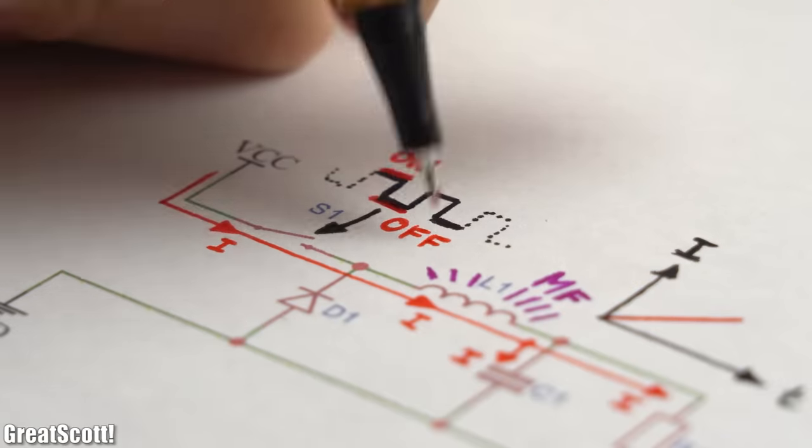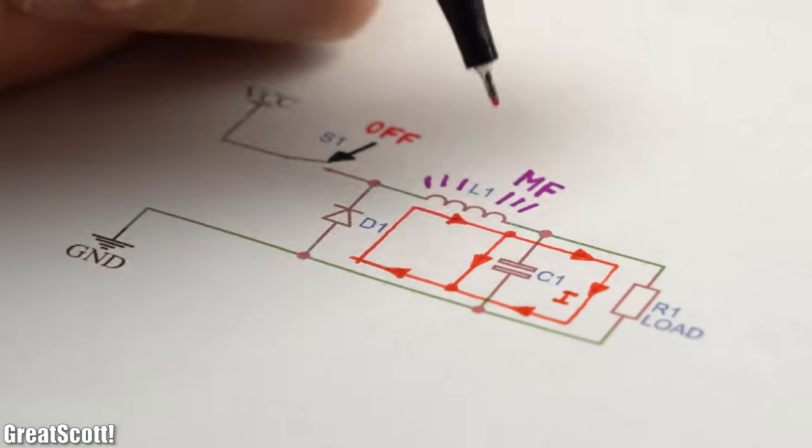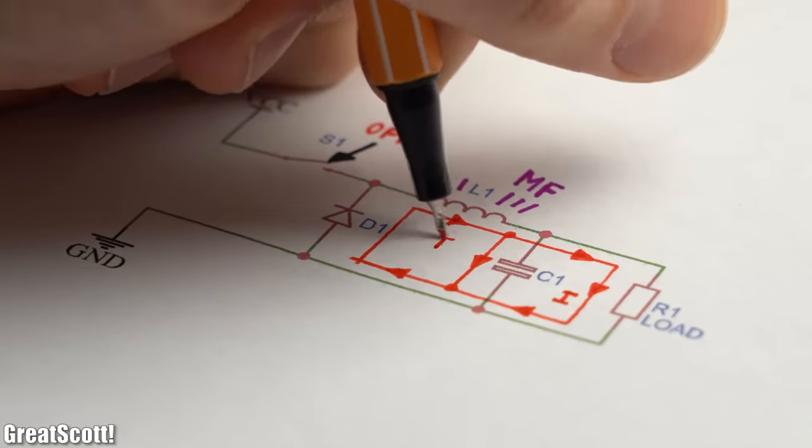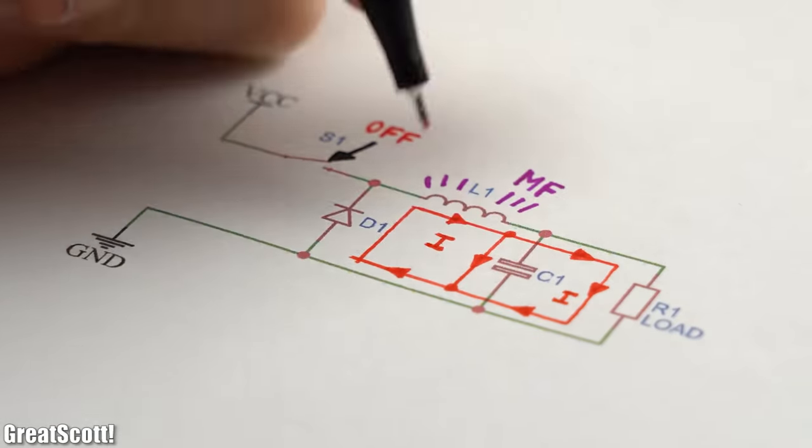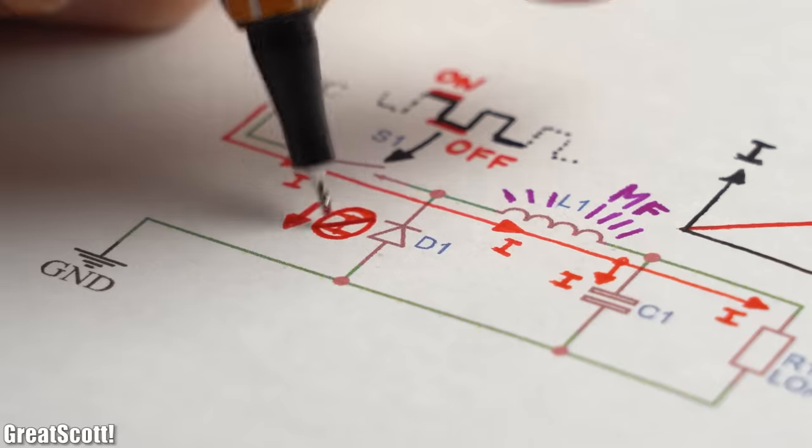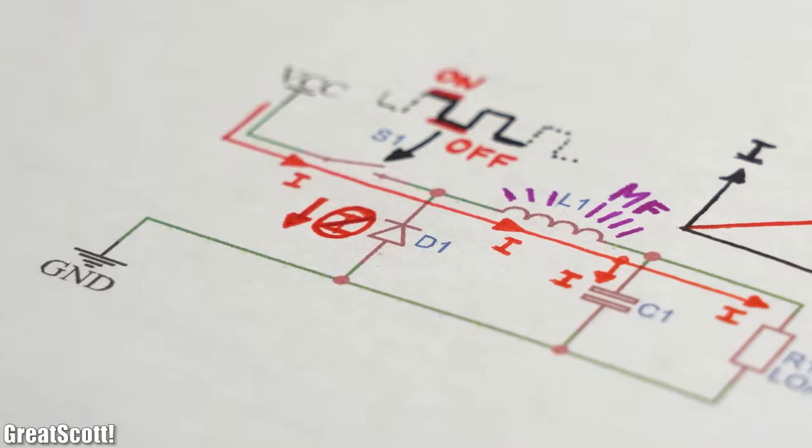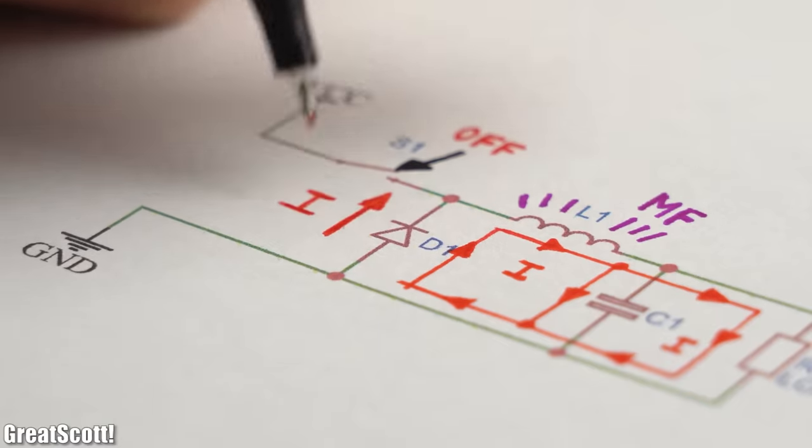This continues until the switch opens, at which point the inductor uses its electromagnetic field energy in order to let current flow the same way as before by now acting as our energy source. This is possible because our diode, which blocked the current flow before, now becomes part of our current loop.